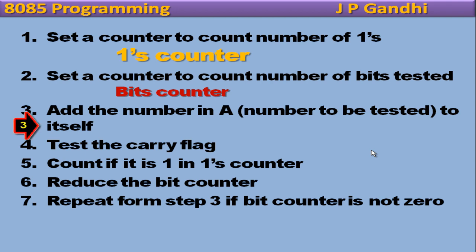Step 3, add the number in A to itself, thereby moving the MSB into the carry flag. Step 4, test the carry flag. How to test it? With the help of conditional jump instruction. So if the flag is 1, then the bit is 1, count it. If the flag is 0, then go to the next bit. Reduce the bit counter and then repeat the whole process from step 3 till the bit counter becomes 0.